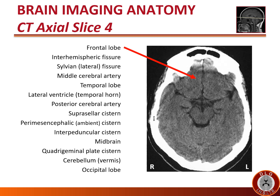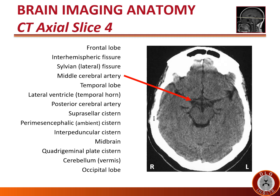Anteriorly at this level we see the frontal lobe. In between the frontal lobes we see the CSF space called the interhemispheric fissure. At this level, we continue to see the sylvian or lateral fissure, separating the frontal lobe from the temporal lobe — and again, where the middle cerebral artery runs. We do see the middle cerebral artery as an isodense tube running from the circle of Willis into the sylvian fissure.